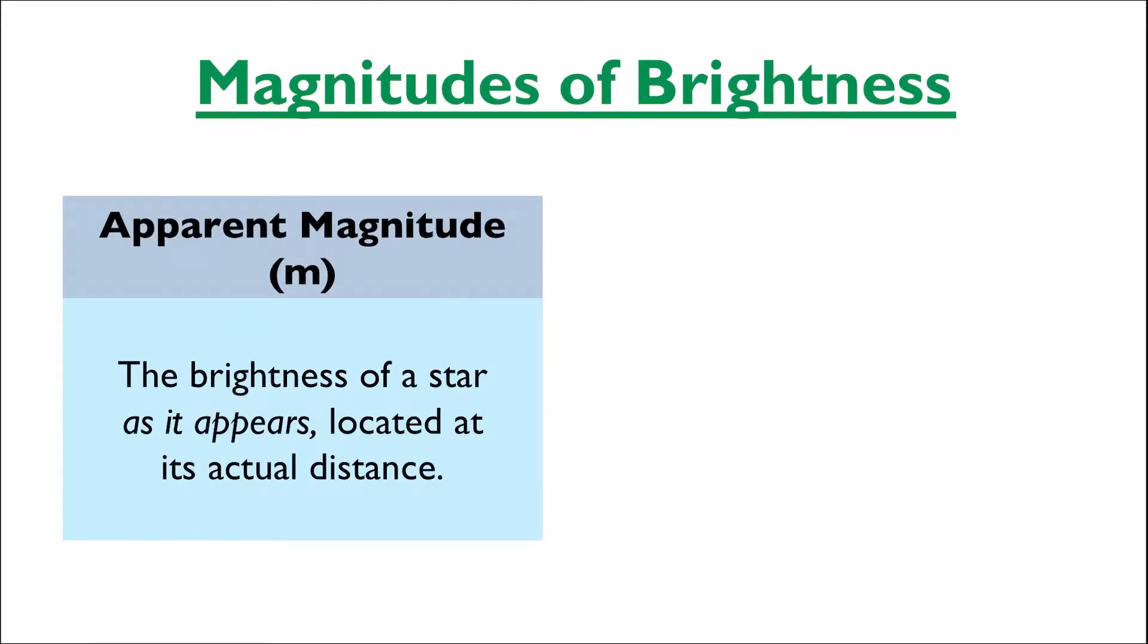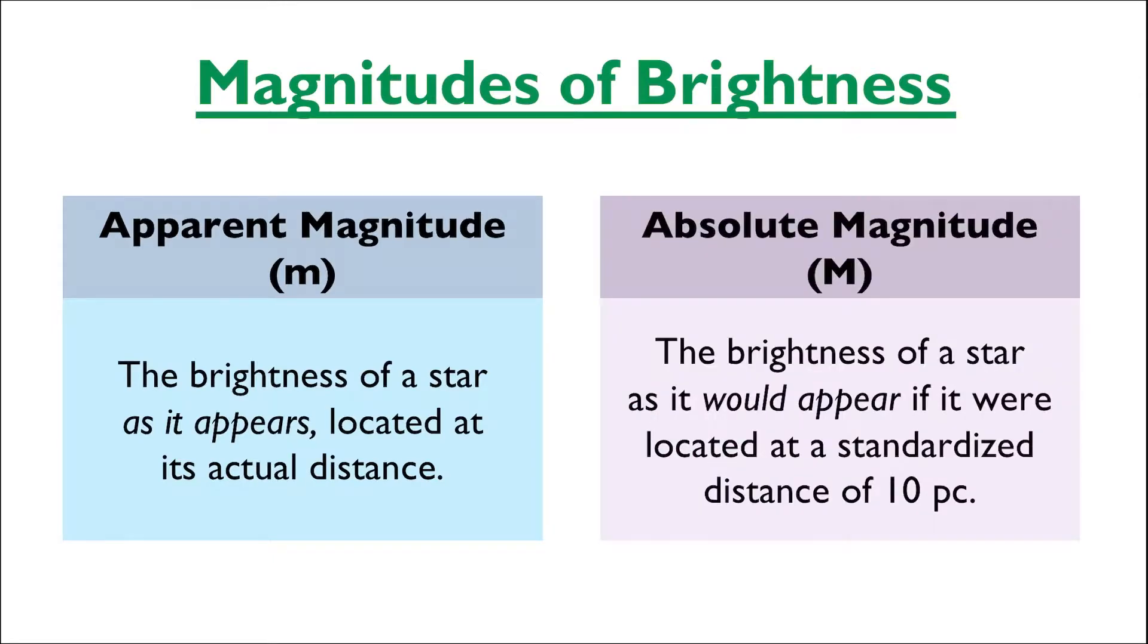There is another type of magnitude that we also commonly use. This is the star's absolute magnitude, represented by the capital letter M, which is the brightness of a star as it would appear if it were located at a standardized distance of ten parsecs from the Earth.